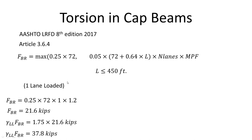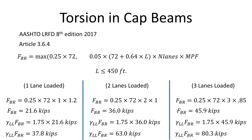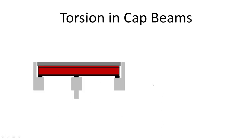For these bridges, we can compute the braking force: it comes out to be 37.8 kips for one lane loaded, 63 kips for two lanes loaded, and 83 kips for three lanes loaded. As you can see, the braking load can be significant and should be considered in design calculations. This braking load is applied six feet from the top of the deck as per AASHTO article 3.6.4.